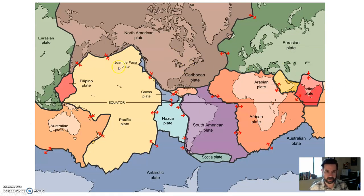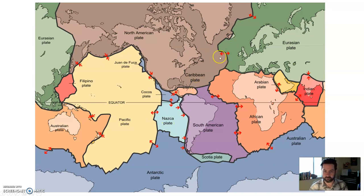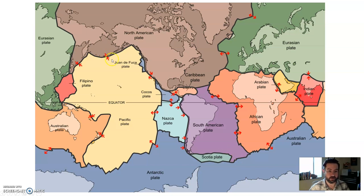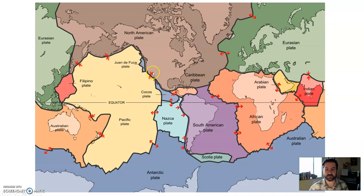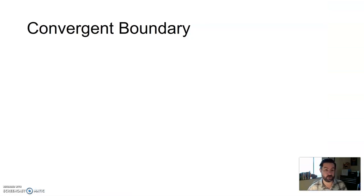This is a map showing a number of the major plates on Earth — there are some very small ones near some boundaries, but these are the major ones. Where you see arrows pointing away from each other, that is a divergent boundary. Arrows pointing at one another indicate a convergent boundary, where plates are crashing together. And where arrows point side by side, that's known as a transform boundary.